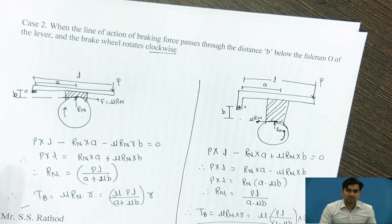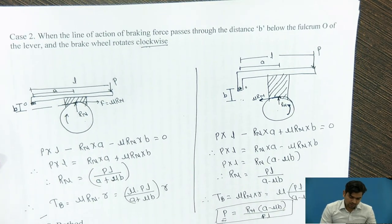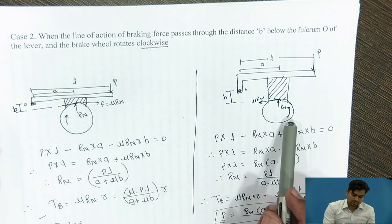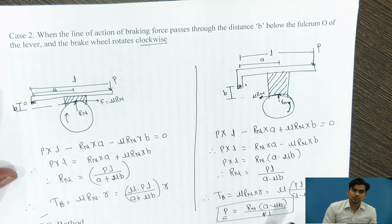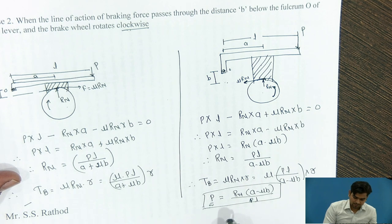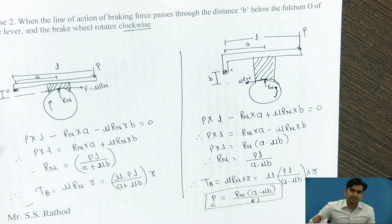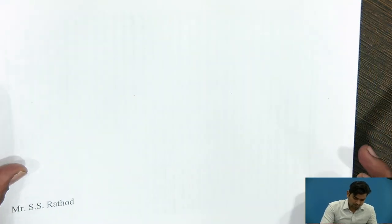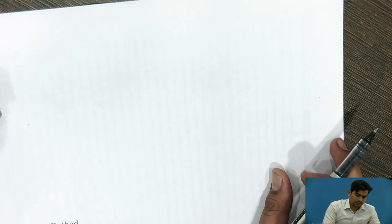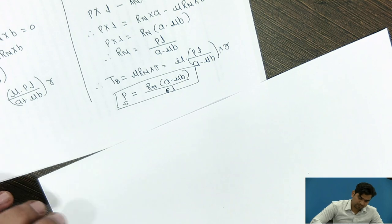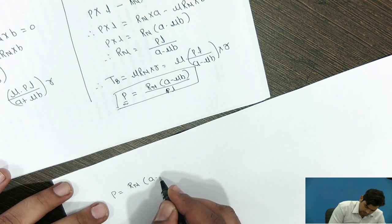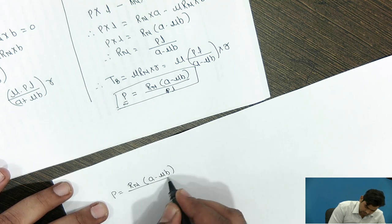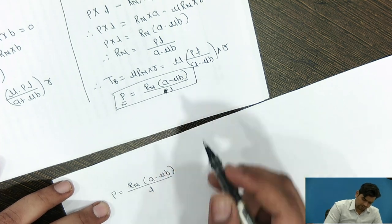In the last lecture, we have seen Case 2, that is when the block drum is rotated in the anti-clockwise direction and we are applying the force P in the downward direction. We got the value of P, that is: P = Rn(A − μB) / L. We will continue from this point.